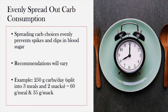Spreading carbohydrate choices evenly throughout the day helps to prevent spikes and dips in blood sugar. Recommendations for carbohydrate goals will vary from person to person. For someone eating 2,000 calories a day — 250 grams of carbs per day — if you split this between 3 meals and 2 snacks, it may look like 60 grams of carbs at each meal and 35 grams of carbs for each snack. This may vary depending on how frequently a person plans to eat throughout the day.